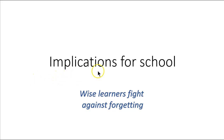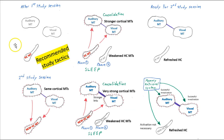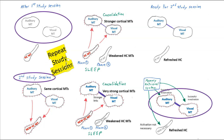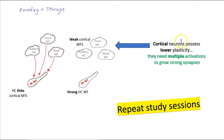Now let's look at the implications for school. Wise learners fight against forgetting. We'll use our diagram to illustrate some recommended study tactics. First, we need to be repeating our study sessions. It's only with repetition that we're going to take relatively weak cortical memory traces and make strong cortical memory traces — we've got to study multiple times. And of course, we get the benefits of consolidation during sleep. Why must we do repeated study sessions? Because cortical neurons possess lower plasticity, so they need multiple activations to grow strong synapses.